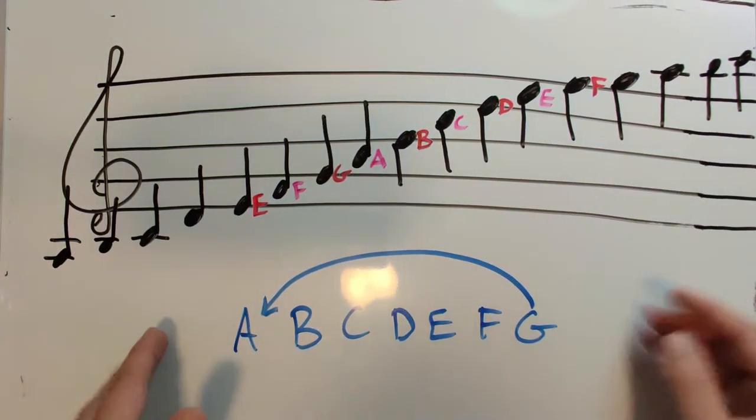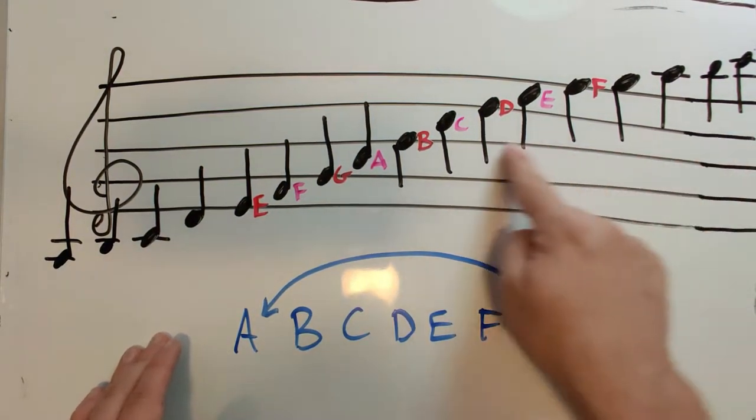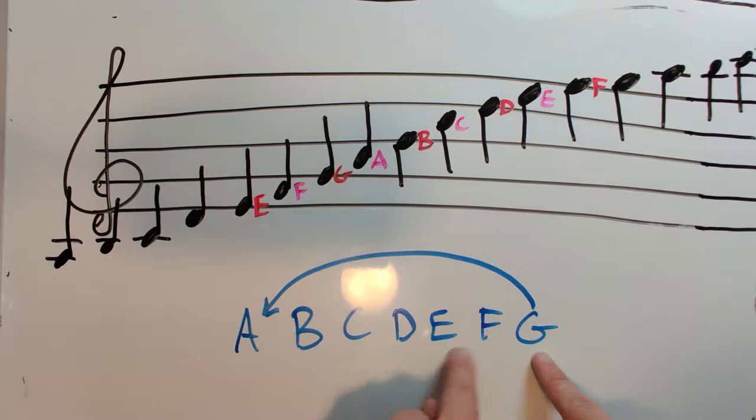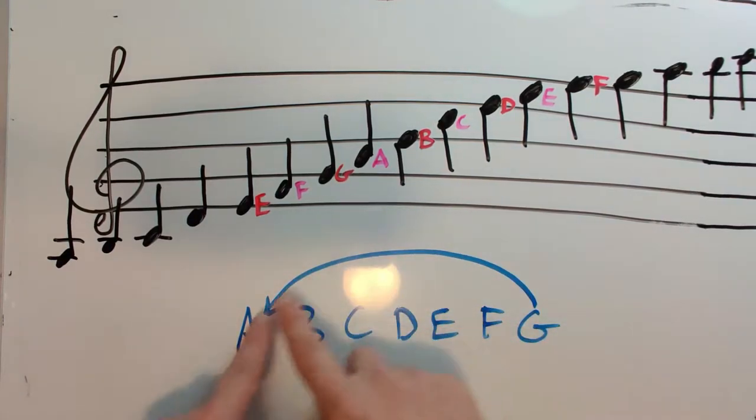So in our last video, we learned that every single line and space had a name. And the names come from our first seven letters of the English alphabet: A, B, C, D, E, F, G. And after G, you always go back to A and repeat it over and over and over again. This came from the 6th century Roman philosopher, Boethius.